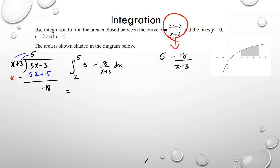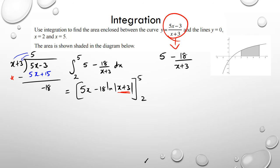Integrating between 5 and 2: the integral of 5 minus 18 over (x plus 3) dx gives 5x minus 18 ln(x plus 3). The derivative of x plus 3 is 1 so I don't need to add anything else. I'm evaluating this between 5 and 2.